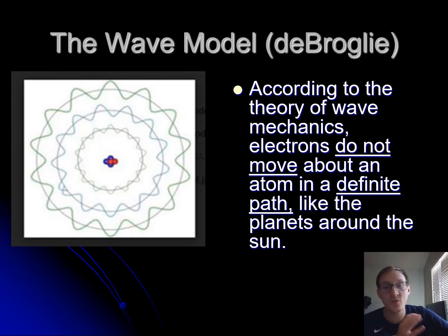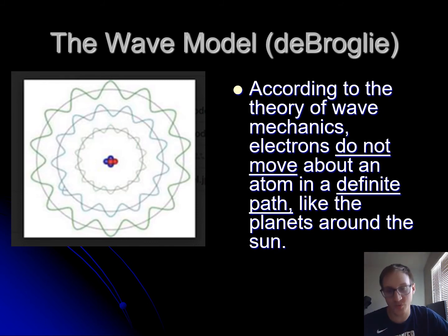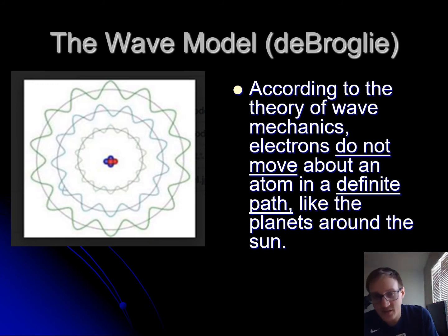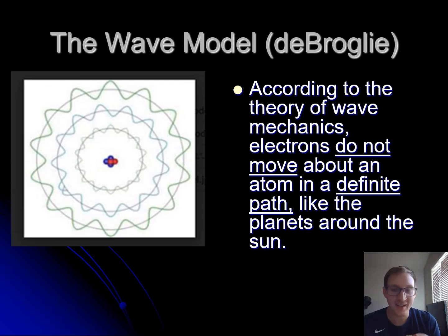Next came the wave model, which uses de Broglie's wave mechanics to explain how electrons move in those orbits. He proposed that because electrons travel like waves, they don't actually have a definite orbit. Instead, they move up and down and around in wave-like patterns — there is no specific fixed path the way Earth orbits the sun.